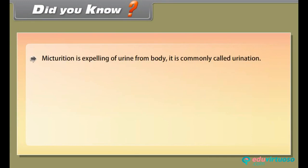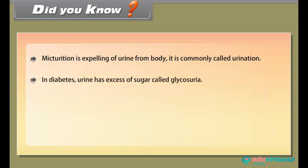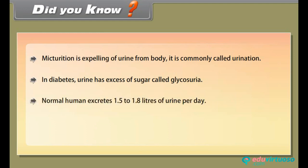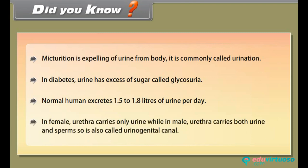Micturition is the expelling of urine from the body, commonly called urination. In diabetes, urine has an excess of sugar, called glycosuria. A normal human excretes 1.5 to 1.8 liters of urine per day. In females, the urethra carries only urine, while in males, the urethra carries both urine and sperms, so it is also called the urinogenital canal.